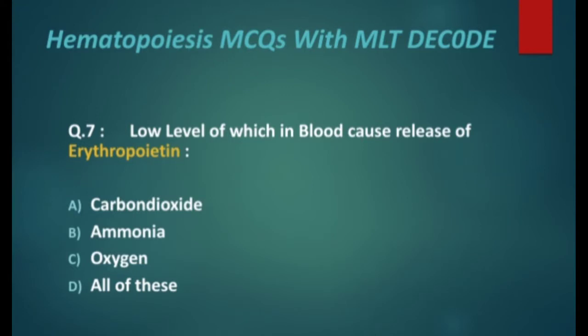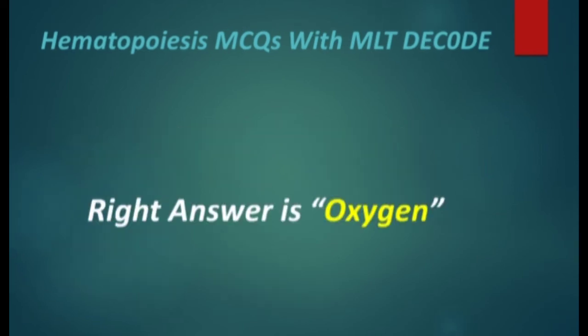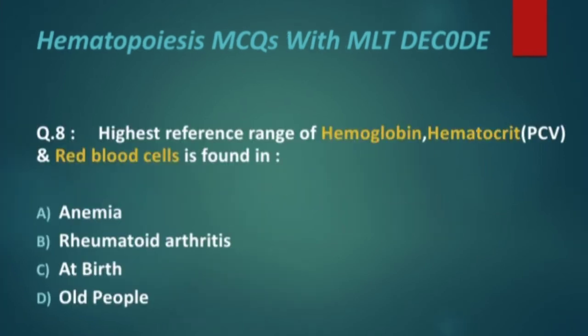Next MCQ: low level of which substance in the blood causes release of erythropoietin — carbon dioxide, ammonia, oxygen, or all of these? The right answer is oxygen.